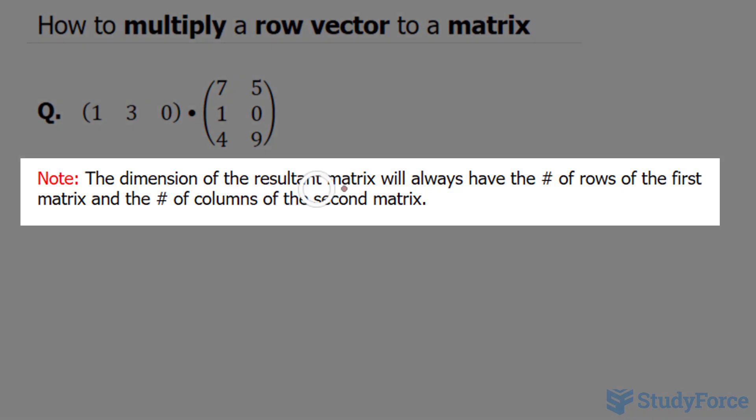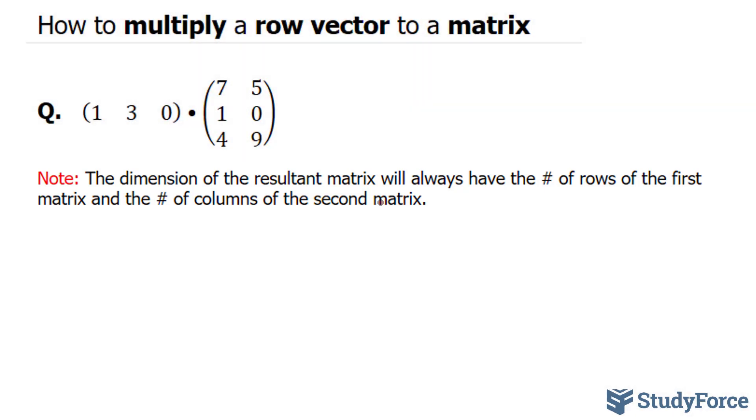keep in mind that the dimension of the resultant matrix will always have the number of rows of the first matrix and the number of columns of the second matrix. So your final answer should contain a matrix with one row and two columns.